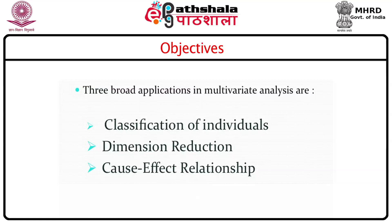The second problem is dimension reduction. In dimension reduction, we are often faced with a very large number of variables, and it becomes very difficult to analyze them together. What we first need to do is reduce the number of variables in some logical manner, so that a small number of variables can say something about this larger group of variables. This is what is referred to as the dimension reduction problem.